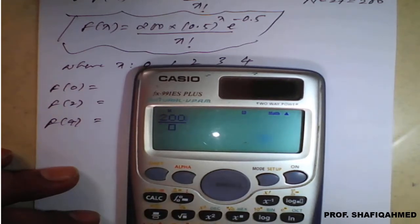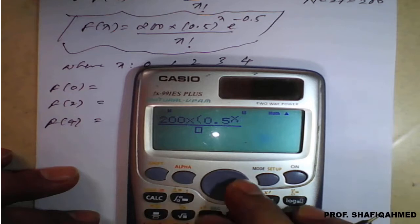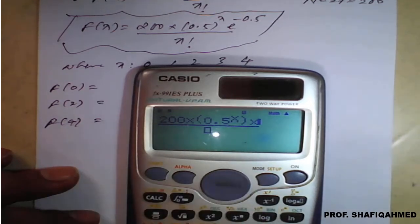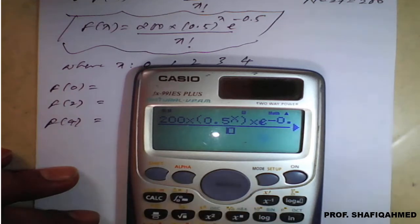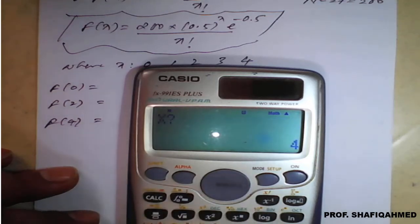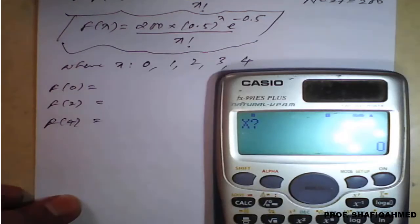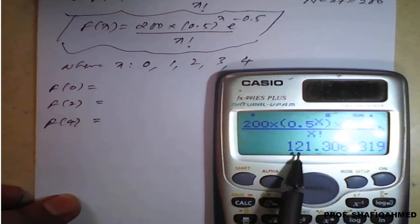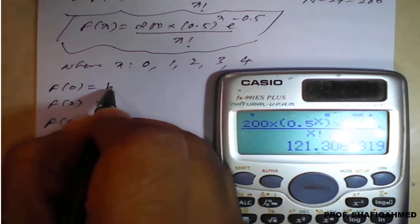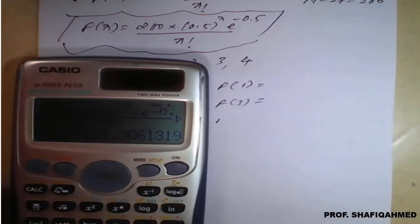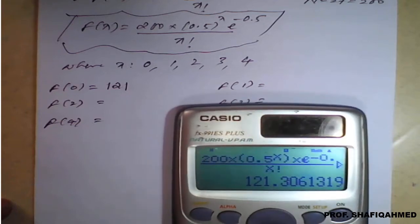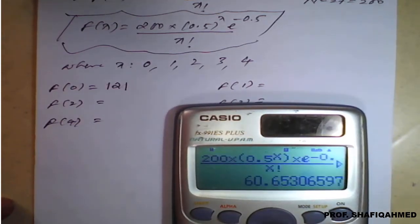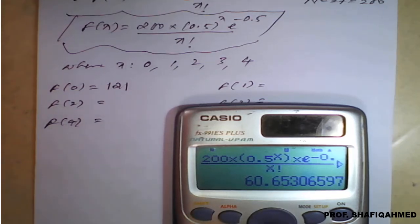Enter into the calculator: 200 into bracket 0.5 raised to X, close the bracket, into E raised to minus 0.5 divided by X factorial — you press shift and you will get the factorial calc option. When you put X equal to 0, we will get 121.30, so I will round it up to 121. Then when X is equal to 1, it will be 60.6 and we will round it up to 61.